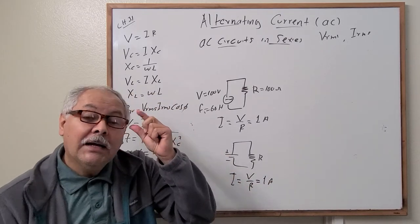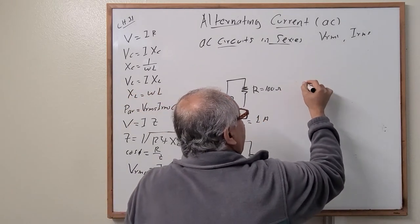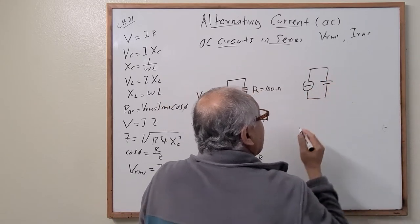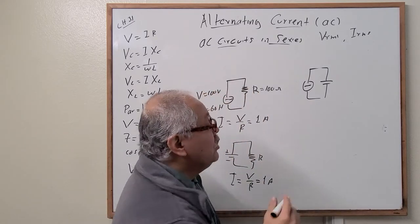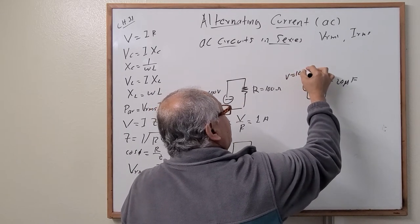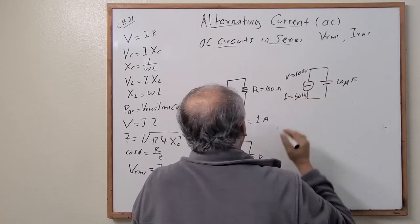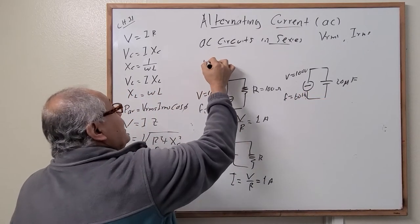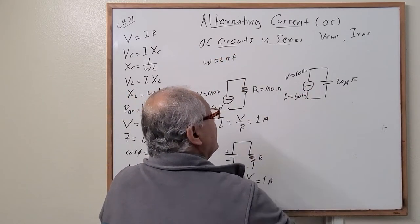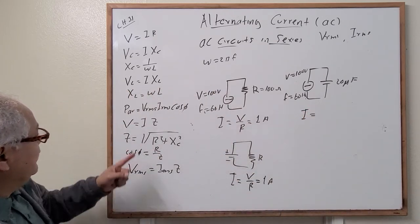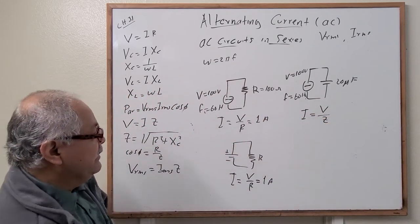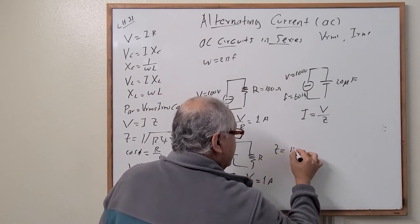Now let's go to the capacitor. We have a capacitor of 20 microfarads with an AC source at 100 volts and 60 hertz, where omega equals 2 pi times frequency. The current equals voltage divided by the impedance Z. Remember, Z is the impedance and has the same units as resistance — ohms. When we substitute the values, the impedance equals the square root of R squared plus (1 over omega times C) squared.